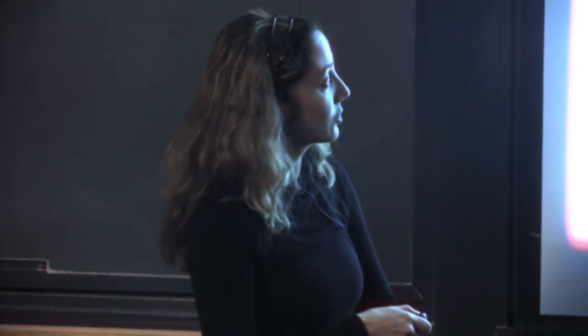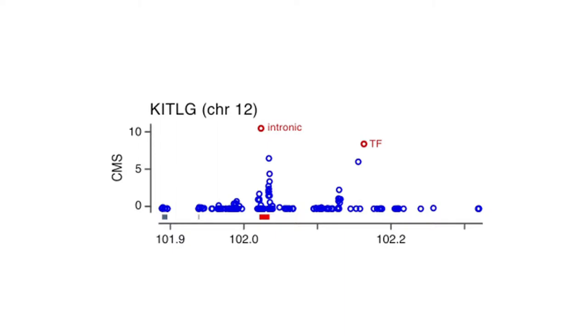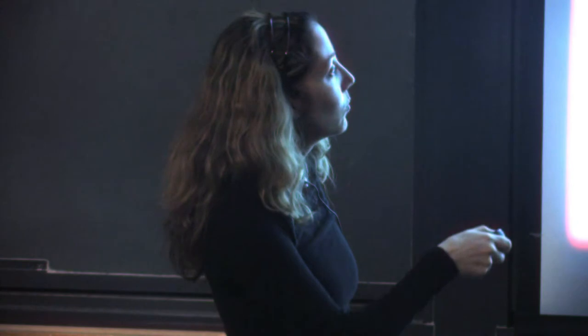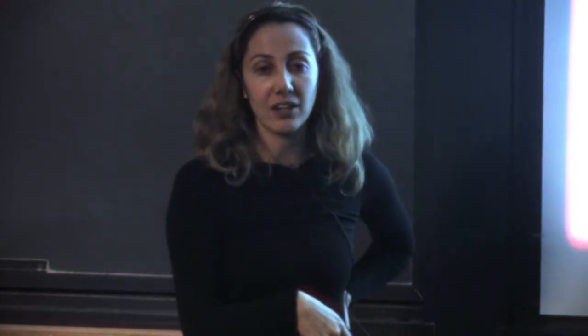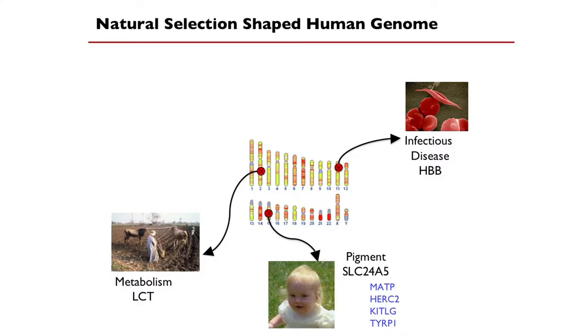One sweep lies right on top of kit ligand, and the other lies right on top of the regulatory region — specifically a transcription factor that's the top score in that region. So we're hitting both kit ligand and its regulatory region. In this context, the picture starts getting filled out. We have infectious disease as an important force of selection with hemoglobin as a good example, and metabolism being important with lactose tolerance. Now the pigment genes — in addition to SLC24A5, we're really showing that these other pigment genes were critical drivers of evolution.